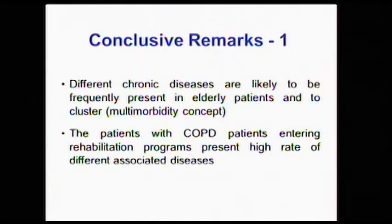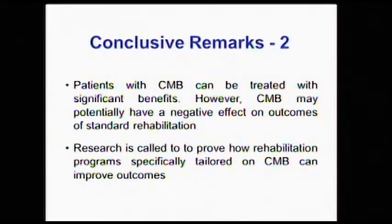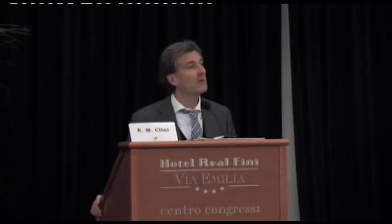In conclusion, different chronic diseases are likely to be frequent in elderly patients and chronic complex patients, and we can now understand how chronic diseases may cluster together. Patients with COPD entering the rehabilitation process present a very high rate of associated conditions, which, although not a contraindication to rehabilitation, may in some cases alter the response and outcome of the rehabilitation process. Future research should prove how rehabilitation programs could be specifically tailored to populations with multimorbidity, in order to improve the outcomes of this therapeutic process.